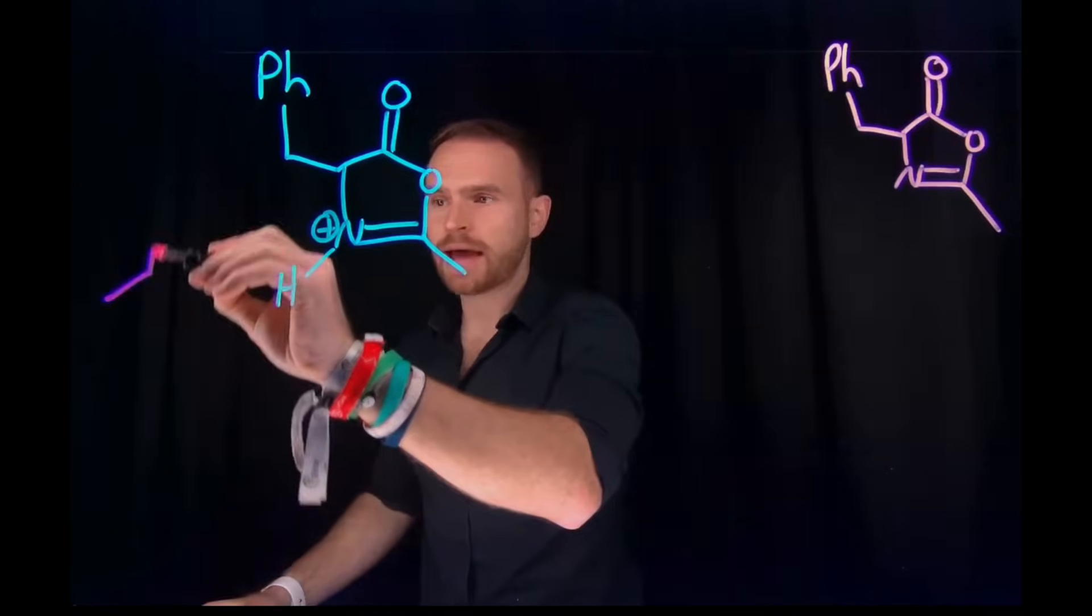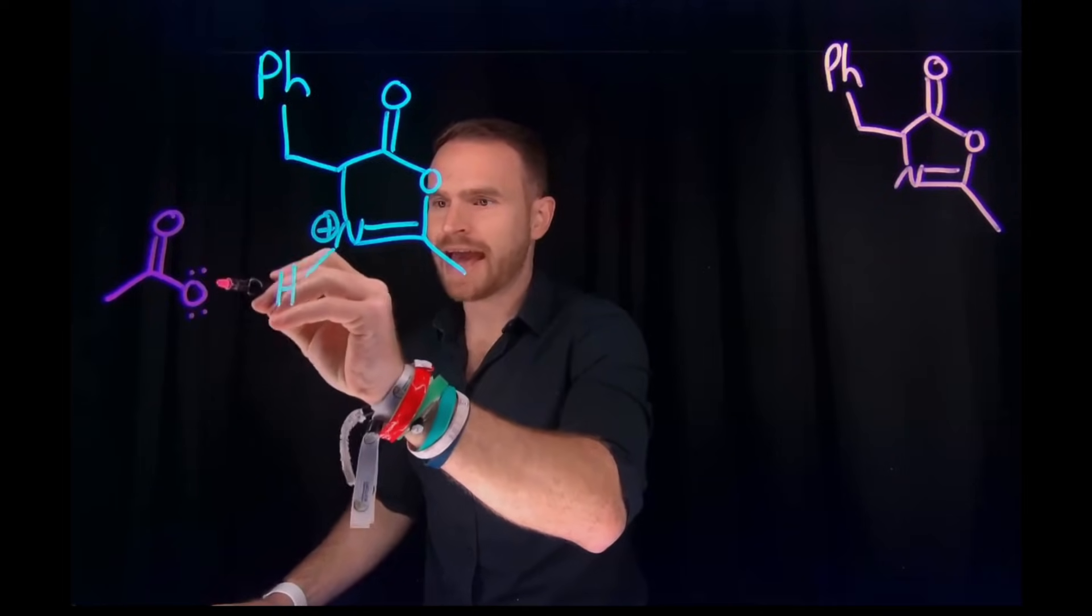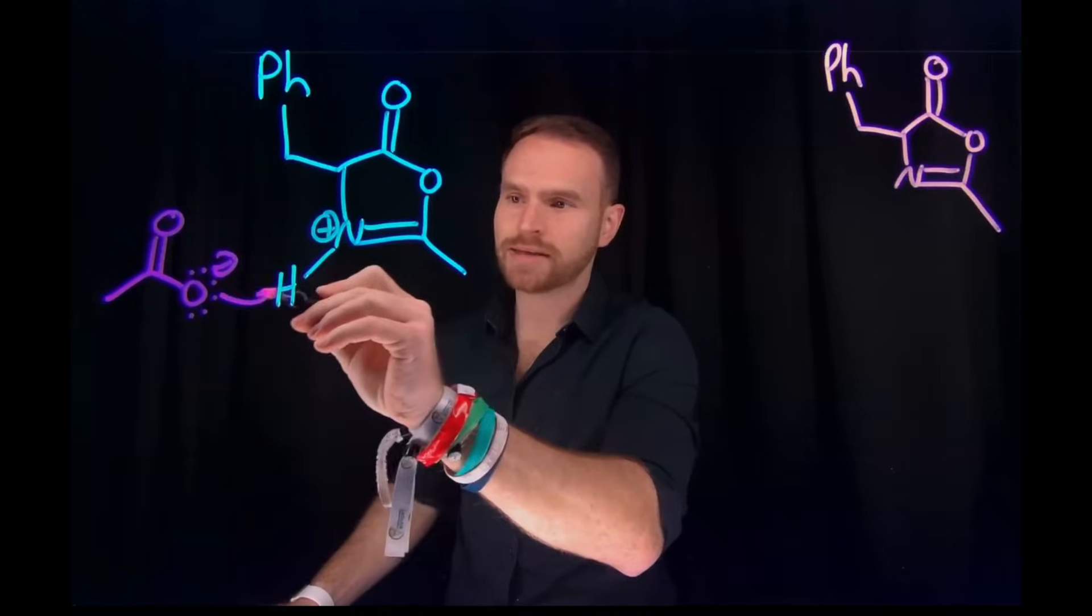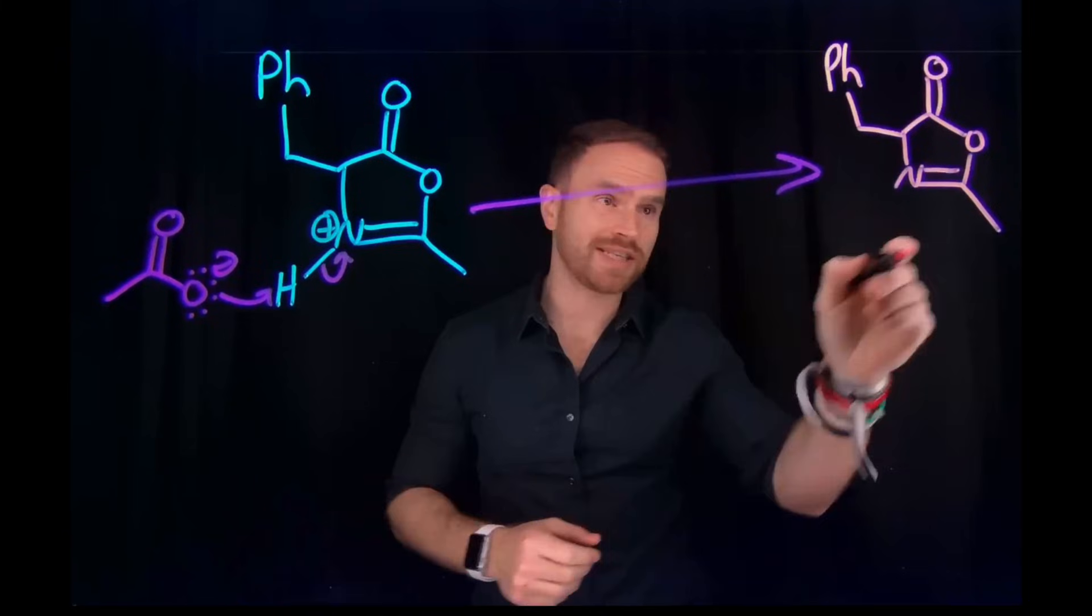And remember, the leaving group in that reaction, or that intermediate step, was the formation of an acetate anion, which is going to be used to act as a base that can come and deprotonate this proton, allowing us to generate our final product, or this azolactone, also known as an oxazolone.